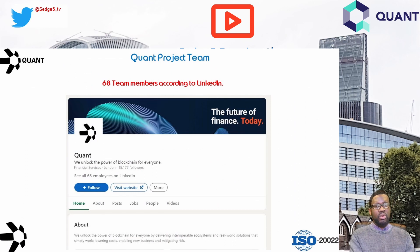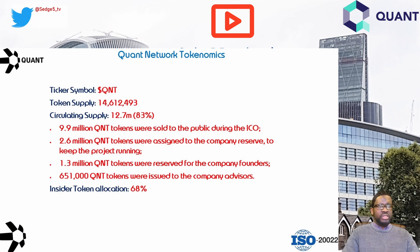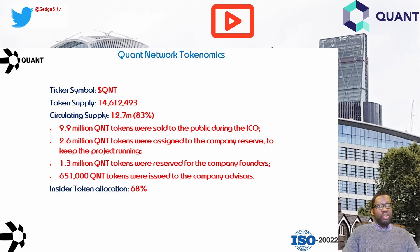Another key part of our DYOR risk evaluation involves looking into the economics at a basic level. The ticker symbol for Quant Network is QNT. Total token supply is 14,612,493. Circulating supply at the point of recording this video is approximately 0.7 million tokens, representing 83% of total supply. The token distribution was allocated as follows.